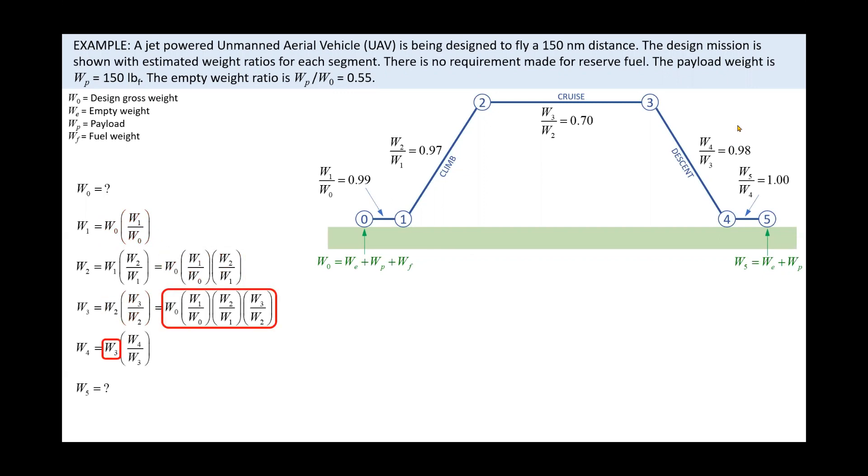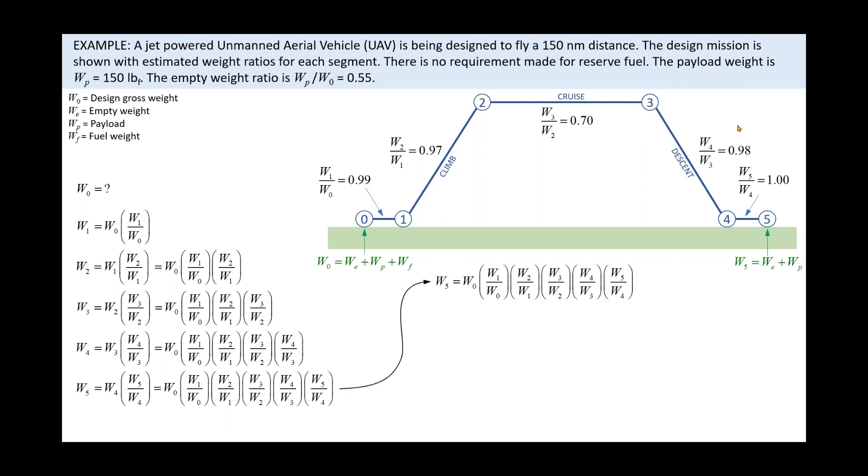Then, let's proceed in this fashion for the remaining segments. This means that we can represent the node at the end of mission, node 5, as the weight of the aircraft at node 0 multiplied by the chain of all the weight ratios.